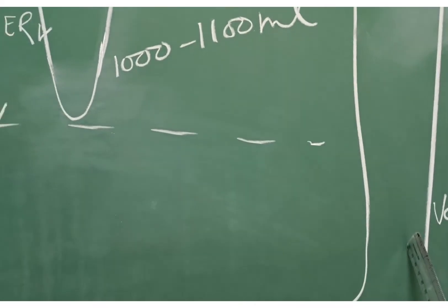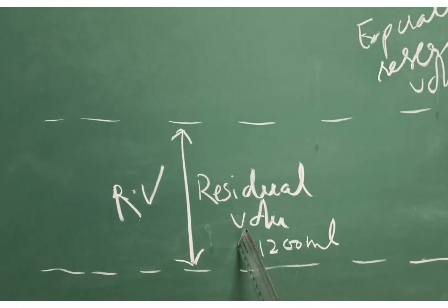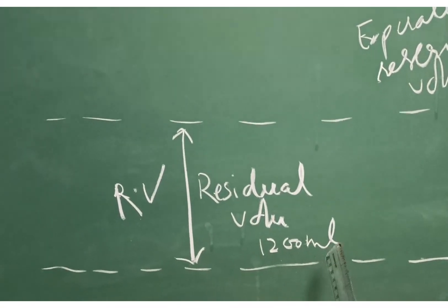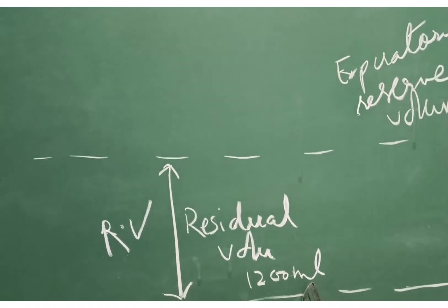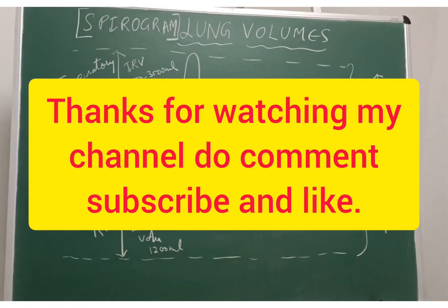Total lung volume is 6 liters. This is your residual volume. It is the volume of air which remains in the lungs after a maximal expiration, and it is around 1200ml. Thanks for watching my channel.